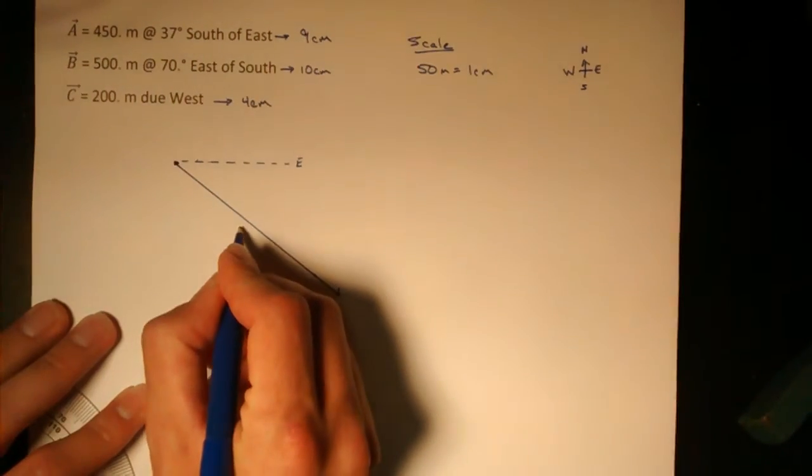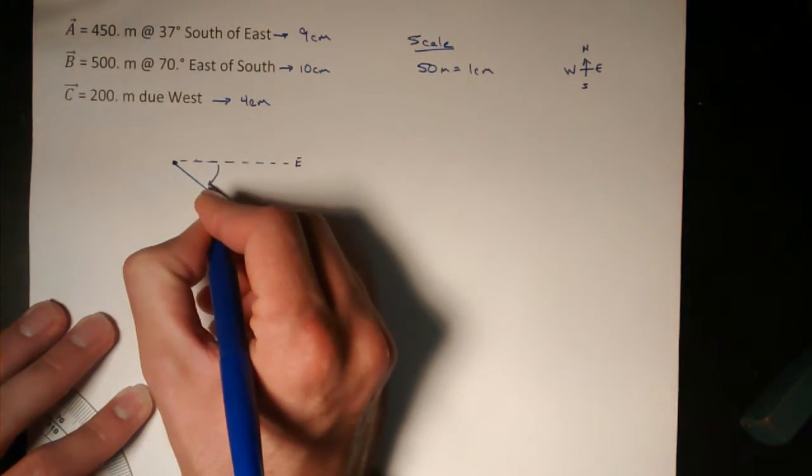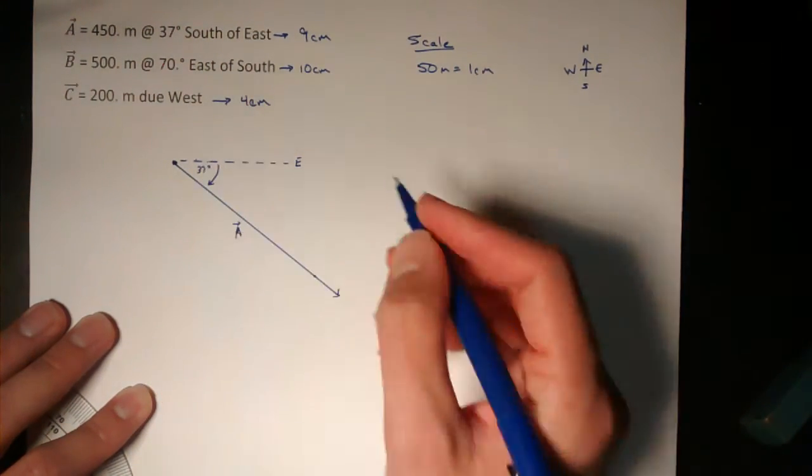And so there we have it, that's vector A, 37 degrees south of east.